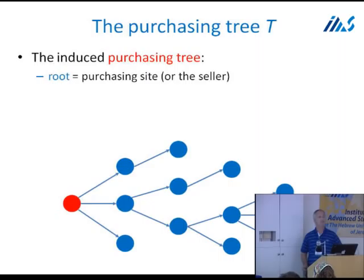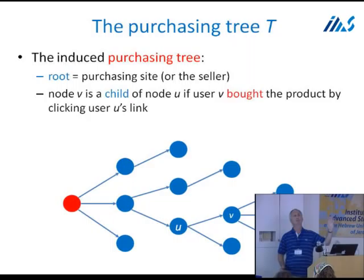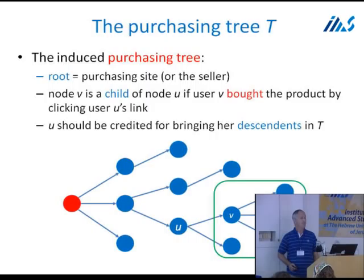This process induces what we call the purchasing tree. The root is the purchasing site or seller. Node V is a child of node U if user V bought the product by clicking user U's link. User U should be credited for bringing her descendants in the tree. The focus of our talk today is the rewarding mechanism.